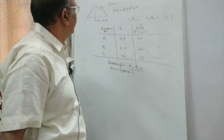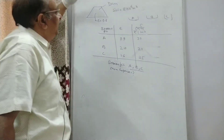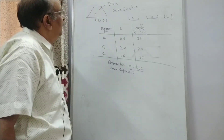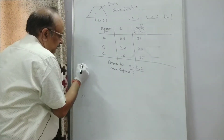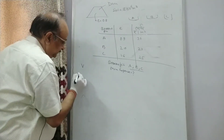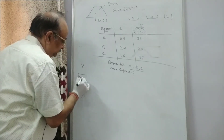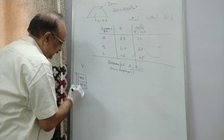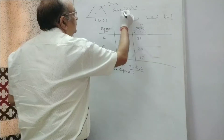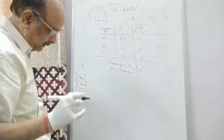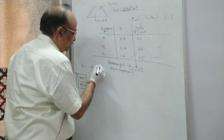So, this is a question. What is the total volume required in this soil? What is the total volume of soil? This is solid and this is void. The total volume of soil is the total volume. The total volume is 18 into 10 to the power 6 meter cube.